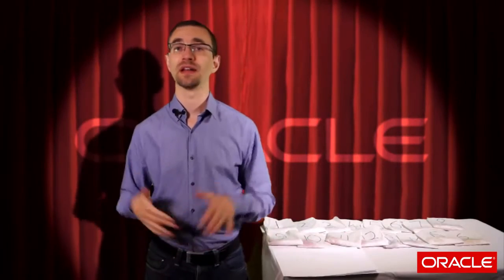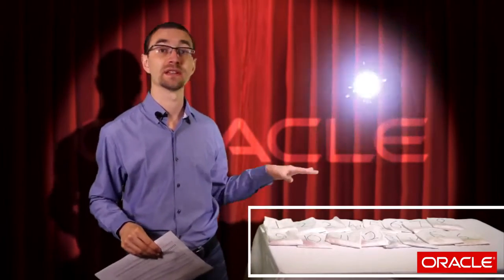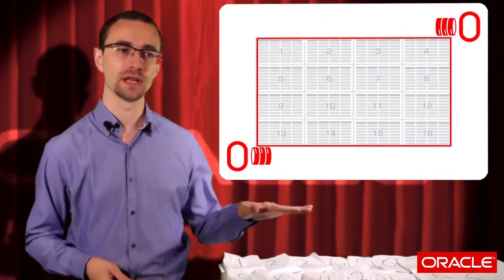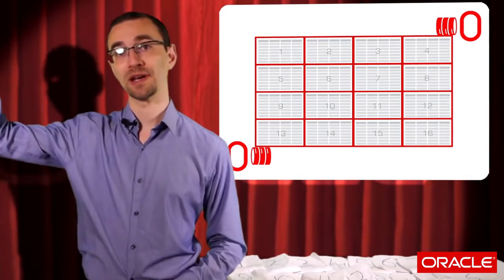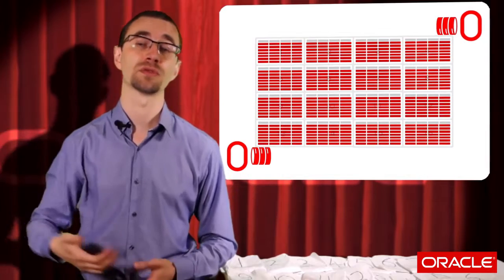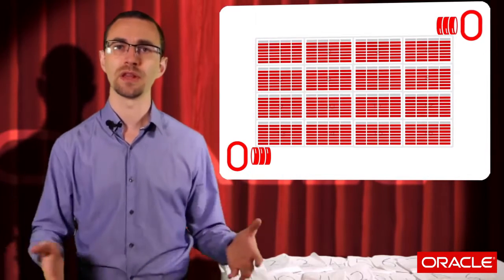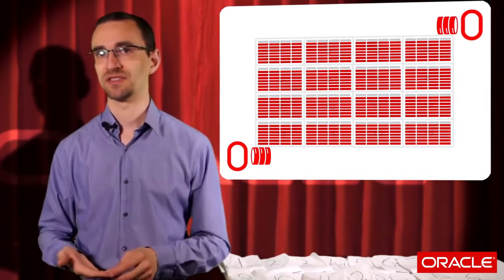Oracle tracks how well the order entries are in an index relative to how they're physically stored in the table via the clustering factor. This is a numeric value with a lower bound of the number of blocks in the table, and an upper bound of the number of rows stored in the table. The lower the number, the better clustered the data is.